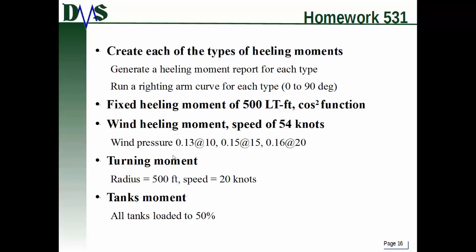Go back and define a wind pressure with these coordinates. After all that's done, define a turning moment with a radius of 500 feet and a speed of 20 knots. Then take all of your tanks, load them to 50%, and generate a tank heeling moment. For each one of these, remember you're going to generate the heeling moment report and run the righting arm curve.